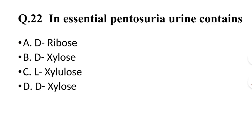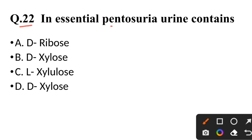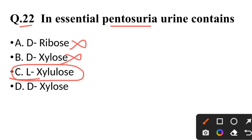Question 22: In essential pentosuria, urine contains — not D-ribulose, not D-xylose — correct answer is L-xylulose.